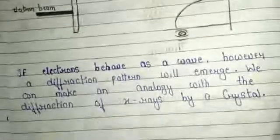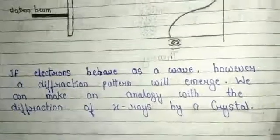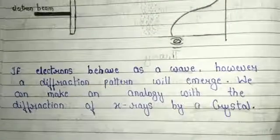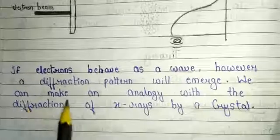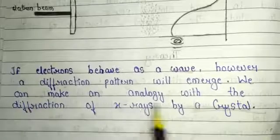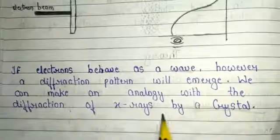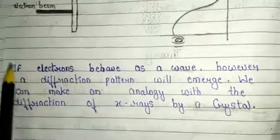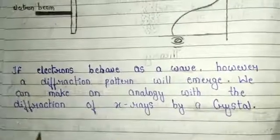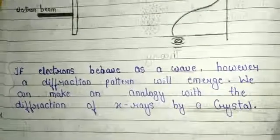The second important condition is: if the electron behaves as a wave, however, a diffraction pattern will emerge. We can make an analogy with the diffraction of X-rays by a crystal. These are the two important conditions.